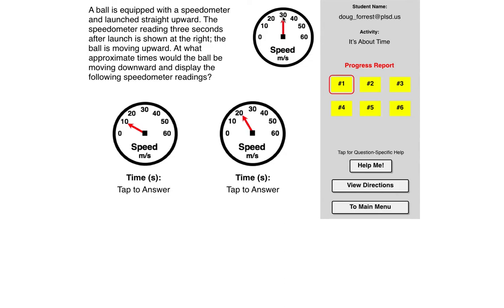So if this is after three seconds, after four seconds it would be moving up at 20, five seconds up at 10, six seconds at zero, seven seconds down at 10, eight seconds down at 20. So I think it's going to be seven seconds here. Next one over here, if it's down at 20 meters per second, that's one second later. So that should be eight seconds.